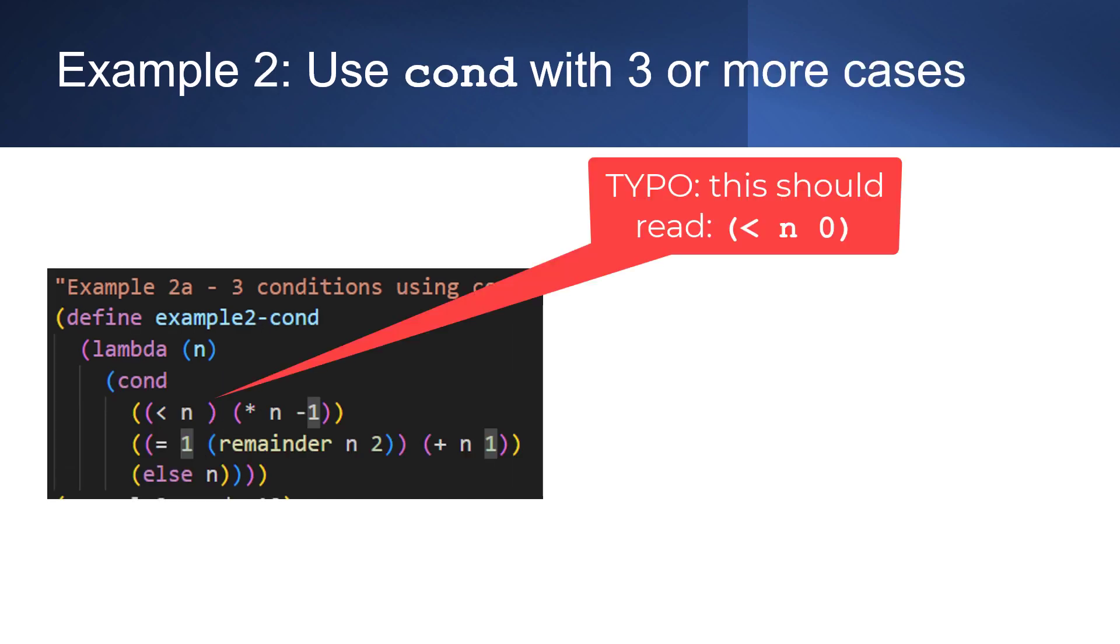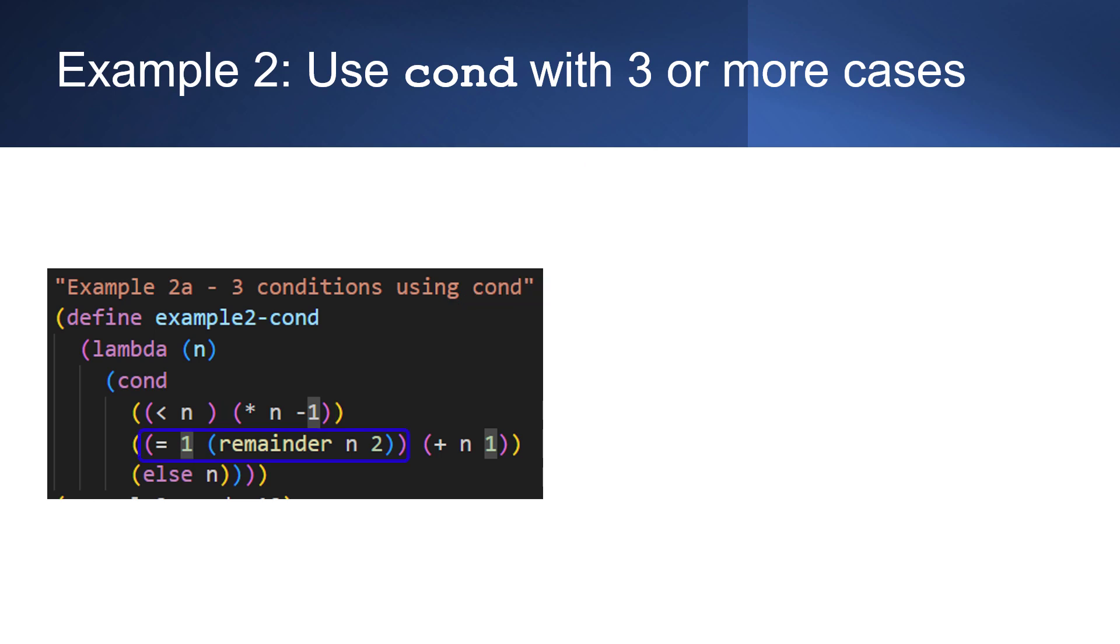So here's an example of cond with three cases. Notice here we have our cond statement and then we have a condition less than n, in which case we evaluate this form. If the remainder of n divided by two is equal to one, meaning n is odd, then we add one to n, and then otherwise we just return n. So here we have three conditions and a cond works well there.